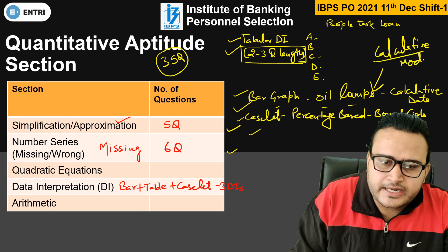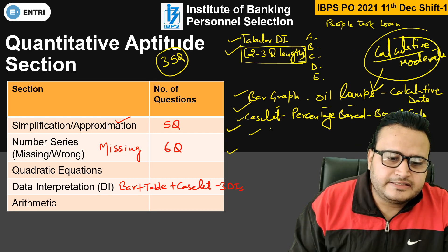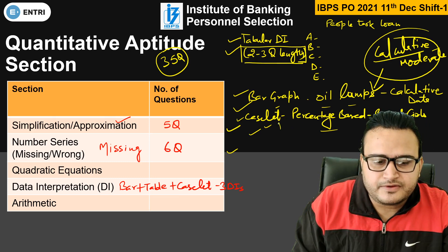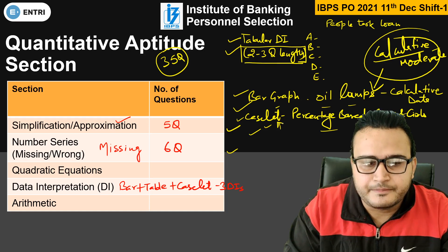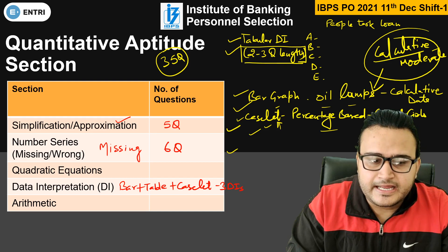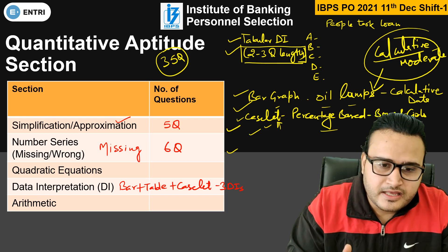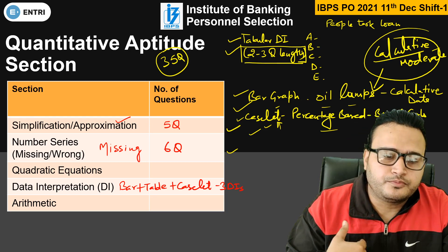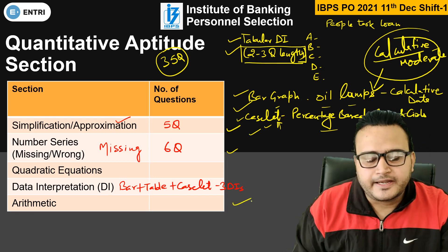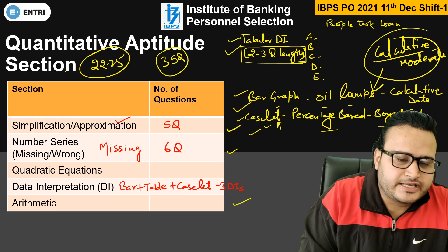So I have to say the DI was of moderate level, not easy level. This is what students are saying. The caselete DI was percentage-based with boys and girls given. Please let me know what was the level of the caselete DI. Just because of the data given in the bar graph DI and 2 to 3 lengthy questions in the tabular DI, students took time to solve the questions and observed these DIs as moderate. The rest of the questions were of arithmetic. The best or excellent attempt for this section was 22 to 25.